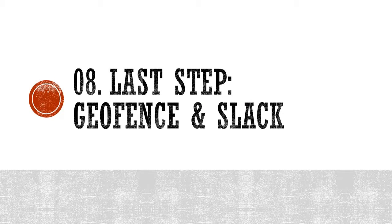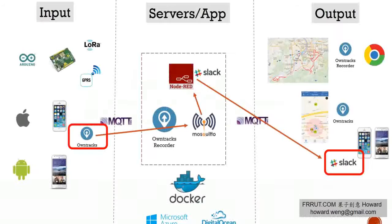Welcome back. This will be the last step — we talk about geofence and Slack. We are almost there. So let's look at the system map again. We have four kinds of devices: two Arduino low-end trackers and two high-end mobile phones. They are doing their job by pushing GPS location to our system.